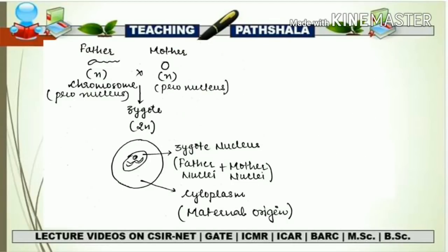This is a basic representation of how a zygote forms. The egg from the mother is haploid and the sperm from the father is also haploid. When they combine, they form a diploid zygote (2n), with n from the father and n from the mother. The nucleus of the zygote has both paternal and maternal origin, whereas the cytoplasm has maternal origin only, because the cytoplasm and mitochondria are inherited from the mother.